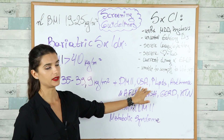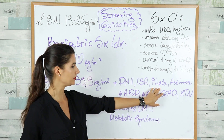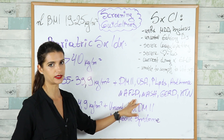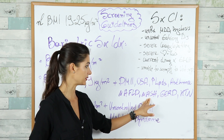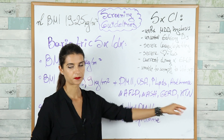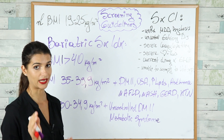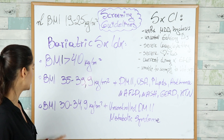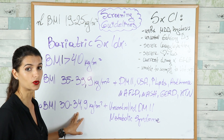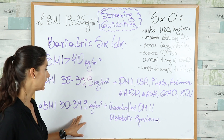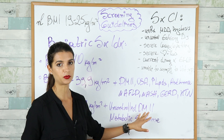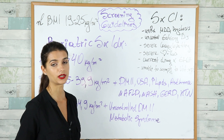Obesity-related conditions that qualify include obstructive sleep apnea, hyperlipidemia, asthma, non-alcoholic fatty liver disease, non-alcoholic steatohepatitis, GERD, or hypertension. The last group who need bariatric surgery are those with a BMI between 30 and 34.9 who have uncontrolled type 2 diabetes mellitus or metabolic syndrome.